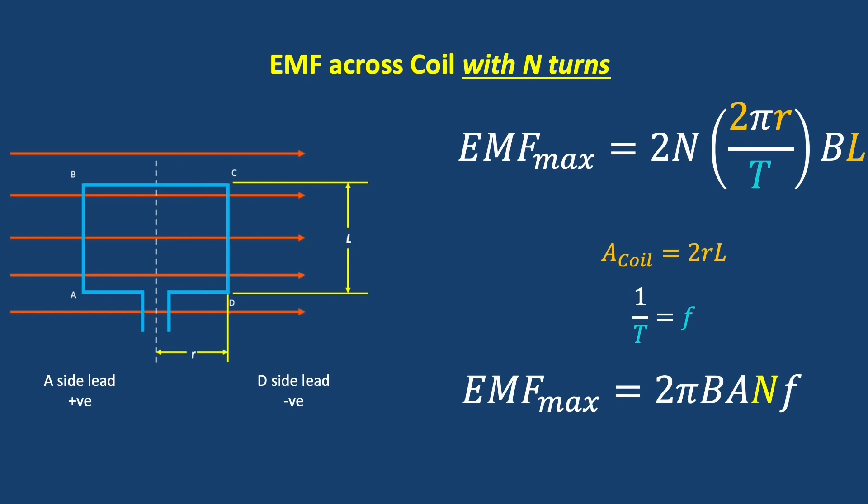Where B is the magnetic field strength, A is the cross-sectional area of the coil, N is the number of turns, and f is the frequency of rotation for the coil.